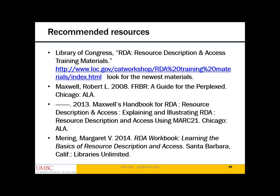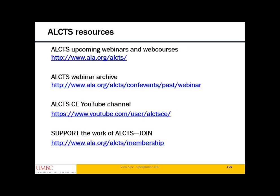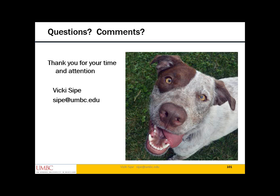Here are some recommended resources that I've used myself and highly recommend. One caution with RDA: since it's a living, breathing document updated regularly — there was a big update in April of this year — always look for the most current version. The oldest resource here is Robert Maxwell's 2008 FRBR: A Guide for the Perplexed — highly recommended if you want to know more about FRBR. Let me also mention the ALEKS resources available to you: upcoming webinars and web courses, the webinar archive, and the YouTube channel. If you're getting anything out of the work that ALEKS is doing, please support ALEKS by joining. If you're an ALA member already, it's very simple — join ALA and join ALEKS when you do. I want to thank you for your time and attention.